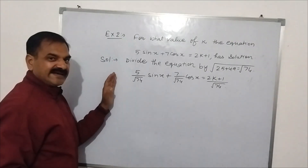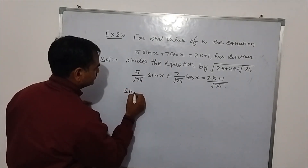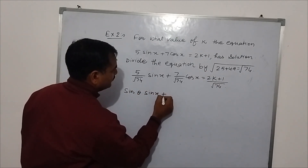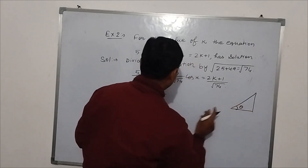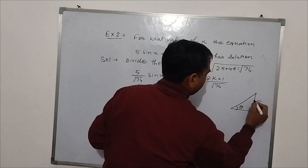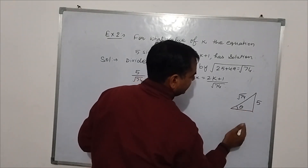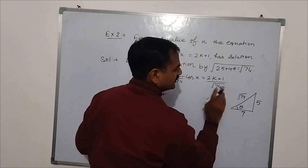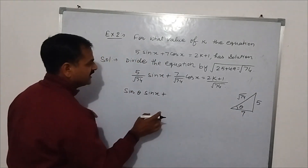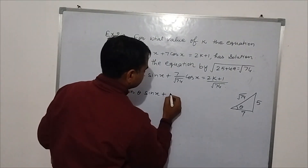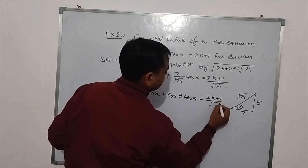Now, if I let 5/√74 equal sin θ, then 7/√74 will equal cos θ. This is because if sin θ = 5/√74, then the hypotenuse is √74 and the opposite side is 5, so the adjacent side is √(74 − 25) = √49 = 7. So cos θ = 7/√74. The equation becomes: sin θ sin x + cos θ cos x = (2k+1)/√74.